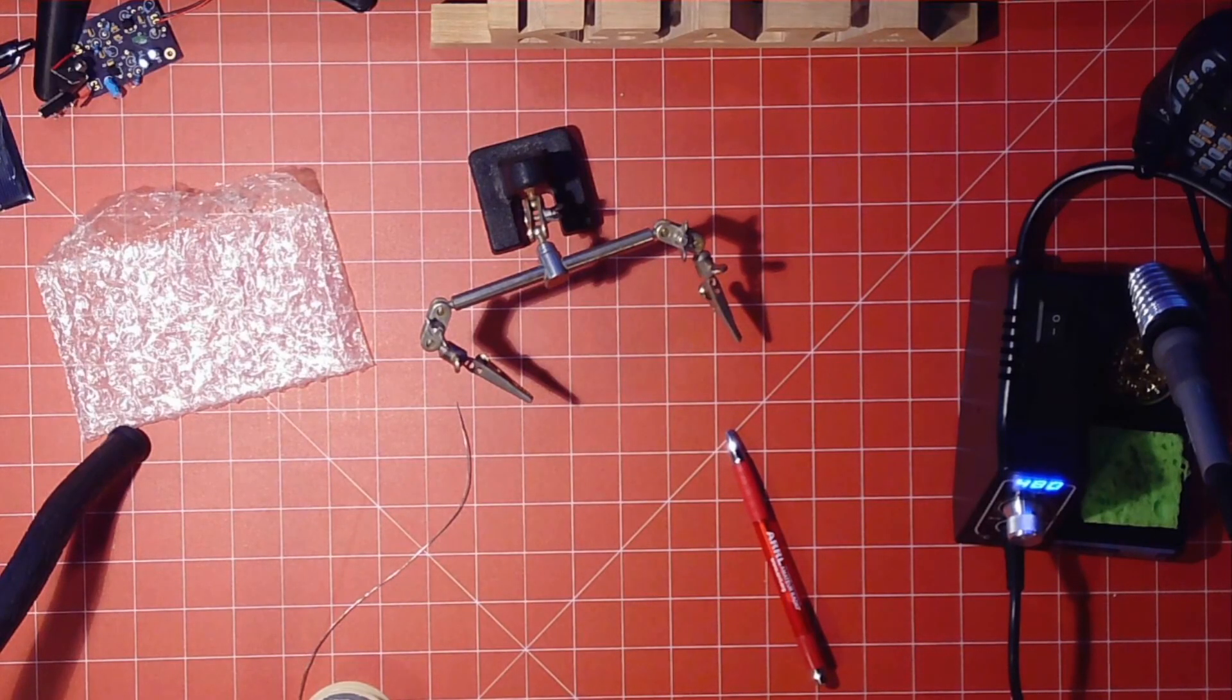Okay, so how to solder two wires together. Maybe you break a wire or something and you need to solder them together. Yes, you could just use crimp-ons or something like that, but soldering gives you a much better connection.